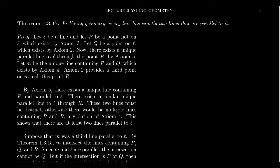Now let's return to a theorem unique to Young's geometry, not just a consequence of axiom 5. In Young's geometry, every line has exactly two lines parallel to it. In the diagram, the parallel families were always color-coded in groups of three: one fixed line and two parallels. Why is this true for every Young's geometry? We have to prove it from the axioms since we haven't yet established this is the only model.